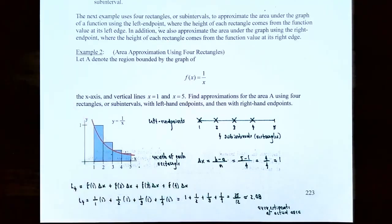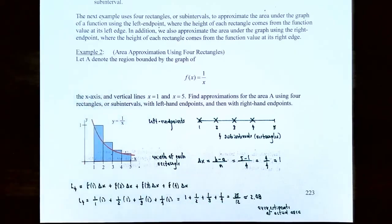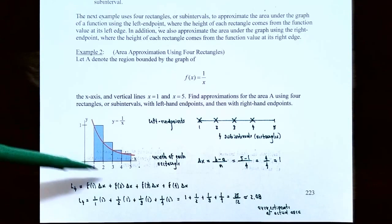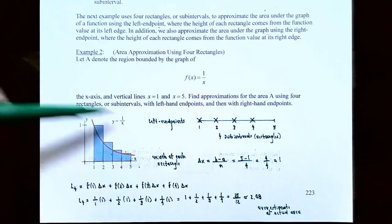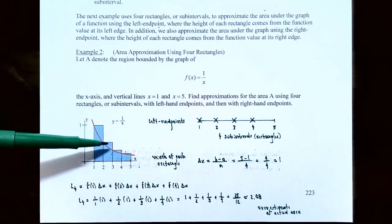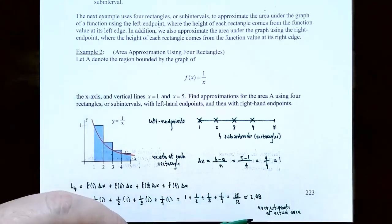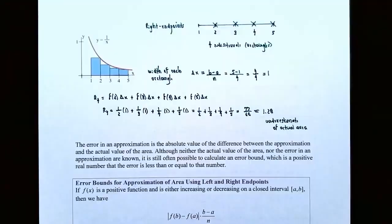The area we just calculated is approximately 2.08. Notice that these rectangles have areas that go above the curve, so this is an overestimate for the actual area A. Now let's do the same problem using right-hand endpoints to calculate the area under the curve.